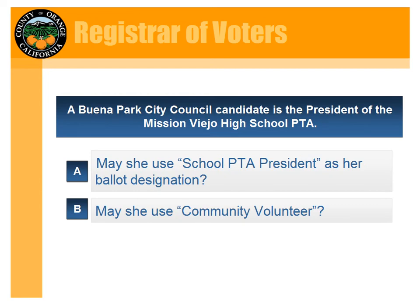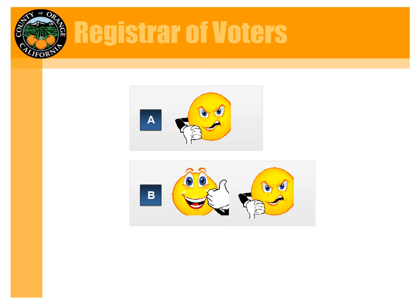Another quiz: a Buena Park City Council candidate is the president of the Mission Viejo School PTA. May she use 'School PTA President' as her ballot designation? Or could she use 'community volunteer'? For 'School PTA President' — no. She can't use a specific position such as PTA President, and the word 'president' itself refers to a status. For 'community volunteer' — perhaps, but it depends on whether there is another principal profession, occupation, or vocation that should be utilized instead. That's the purpose of the ballot designation worksheet — if they put down 'community volunteer,' they need to indicate why they are able to use that.